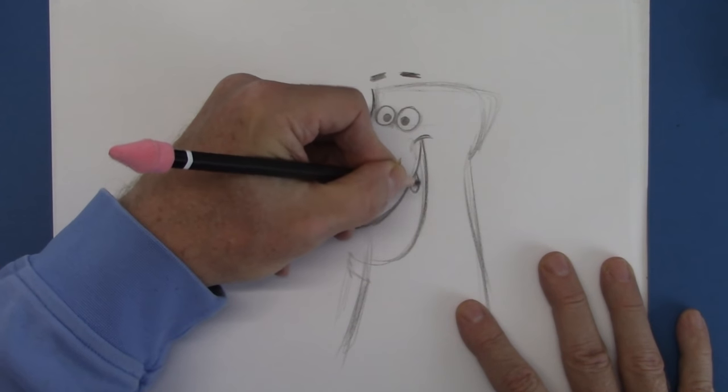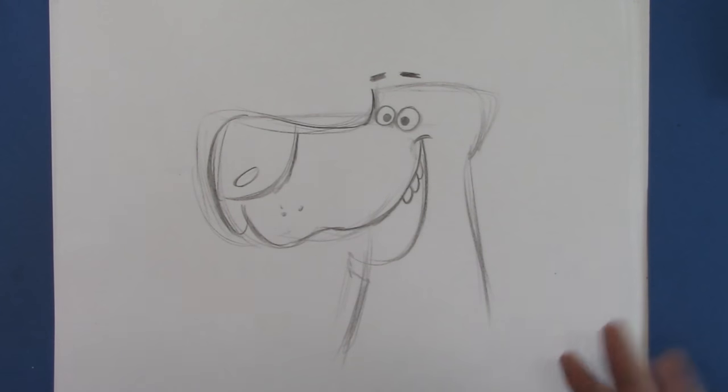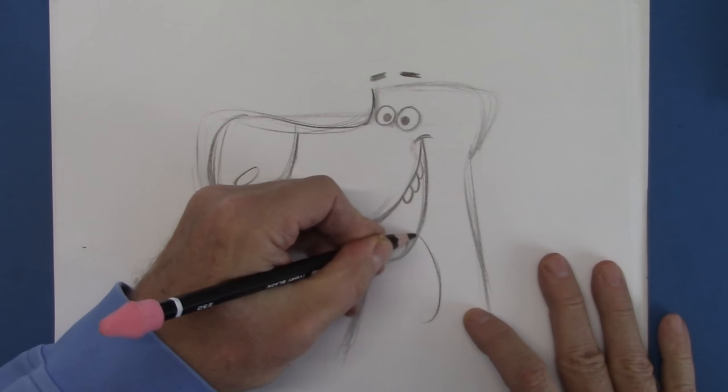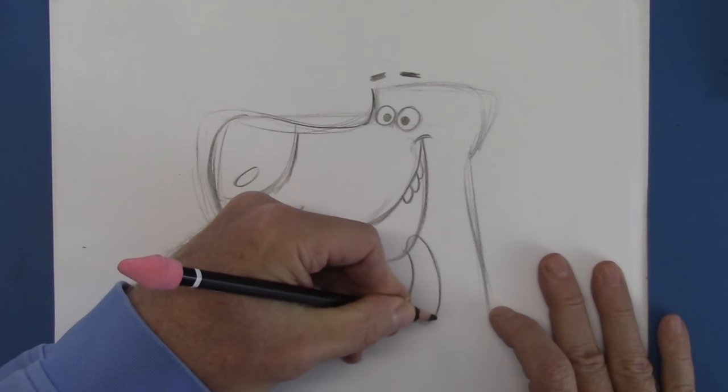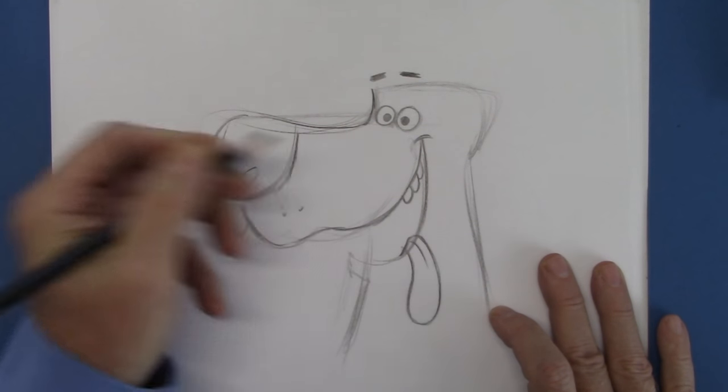So we'll give him a couple of teeth back here, kind of where we'd see them on a human. On a dog you'd see them up here. I'm going to give him a tongue, fold that, flap it over this way, like so.